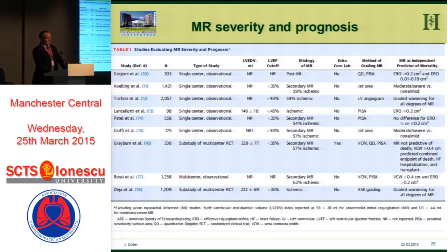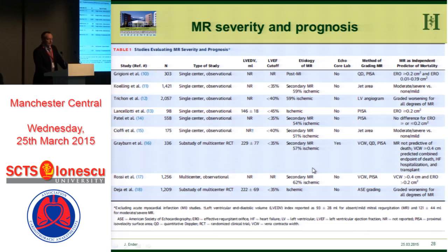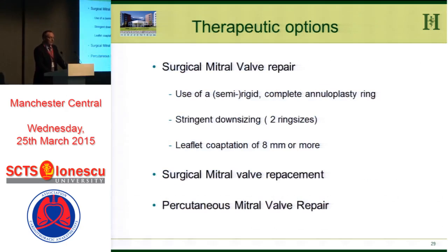Regarding MR severity and prognosis: data from the same publication show outcomes across 303 patients at different ERO thresholds around 0.2 cm². There is no clearly demonstrated survival benefit. The PISA method was used for ERO; jet area measurement is no longer recommended and should not be used despite still appearing in some textbooks. The problem across all these studies is that correcting secondary MR has hardly been shown to improve survival.